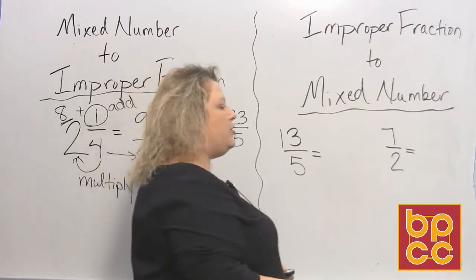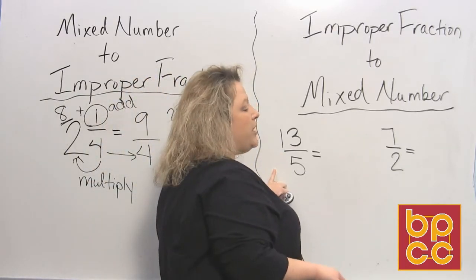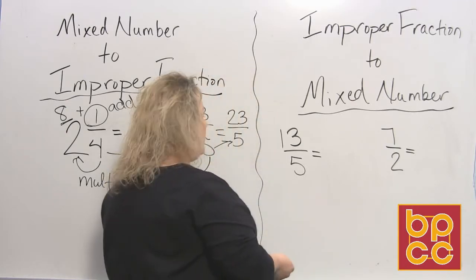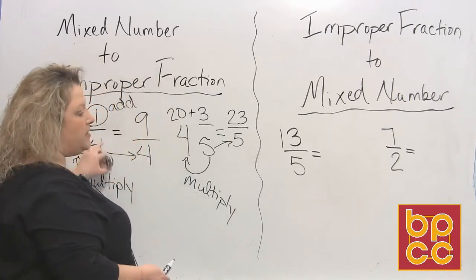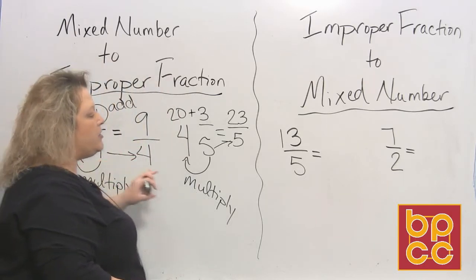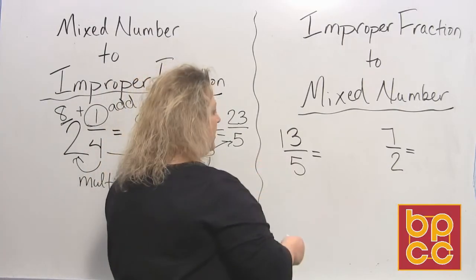Now, let's say that you want to do the opposite. I give you an improper fraction and I want you to change that into a mixed number. So here's what you do. We do the opposite. When we were trying to go from mixed numbers to improper fractions, we did multiplication first. So when we do the opposite, we're going to do division first because that's how we undo this.